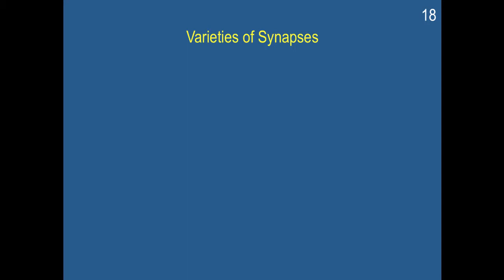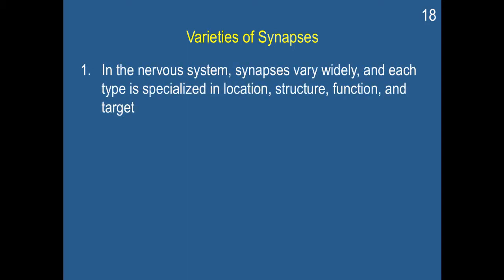Alright, so in addition to different types of neurotransmitters, which we'll be talking more about later on, there are also a variety of types of synapses. So right now we've been talking primarily about one synapse, which is an axon terminal ending on a dendritic spine, but synapses actually vary widely, and each type is specialized in location, structure, function, and target.